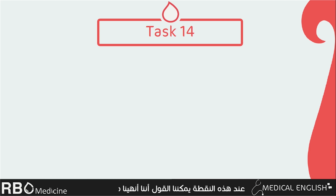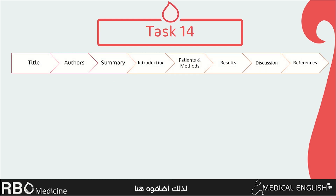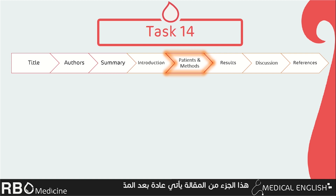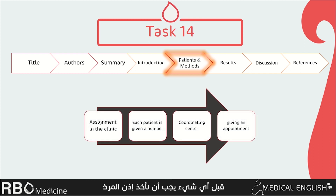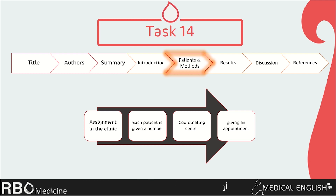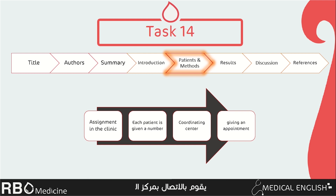There's an extra section you may find in other articles, added to our subject: patients and methods. This part usually comes after the introduction and before the results, and it describes how patients are recruited in the study. First, patients must give permission to use their health information. They are assured their information is used for scientific purposes only. To preserve privacy, each patient is given a number instead of a name. When the doctor is ready to start the treatment, he calls a coordinating center and the patient is given an appointment on the randomized schedule.